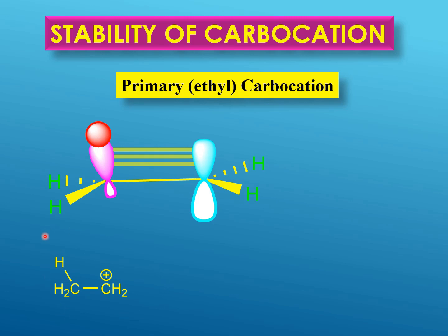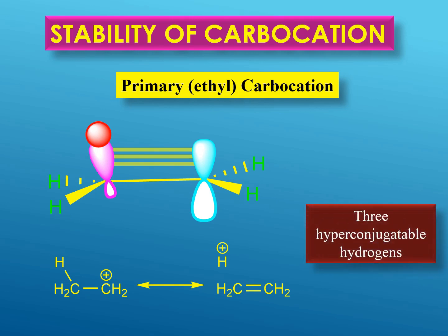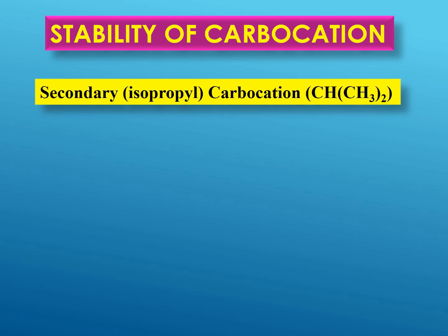Here is how hyperconjugation occurs in an ethyl carbocation: the hydrogen atom is involved in hyperconjugation, and the electrons in this C–H bond are shared between these two carbon atoms, forming a double bond. This hydrogen is left electron-deficient but remains within bonding distance, so the electrons can come back and form a sigma bond. All three hydrogens on this carbon atom can be involved in hyperconjugation, giving a total of three hyperconjugatable hydrogens, meaning hyperconjugation can occur three times in an ethyl carbocation.